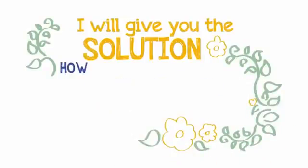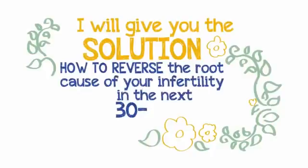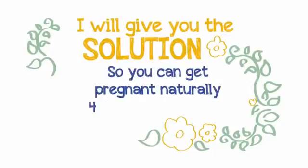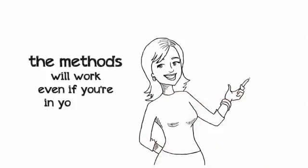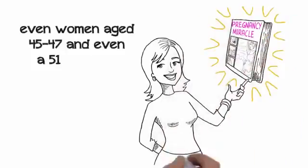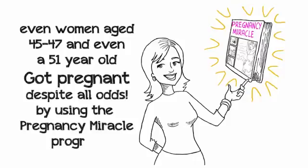I'm going to show you how to reverse the root cause of your infertility in the next 30 to 60 days so you can get pregnant naturally within 4 to 8 short weeks from now. The method works even if you're in your late 30s or 40s.